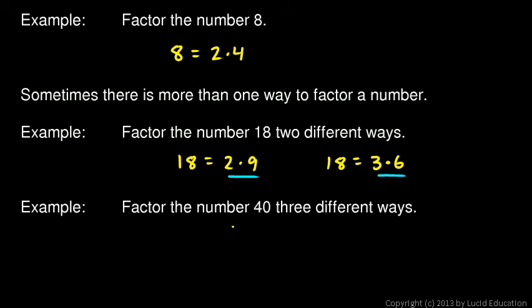In this last example, we're told to factor the number 40 three different ways. 40 is equal to 2 times 20. We need to come up with two other ways. 40 could also be written as 4 times 10. And you probably recognize 40 just from basic multiplication. 40 is 8 times 5. So that's the number 40 factored three different ways.